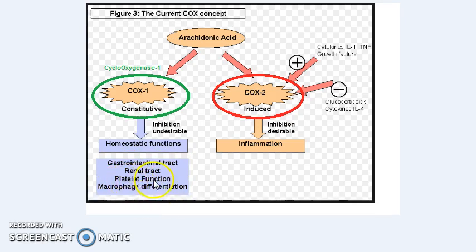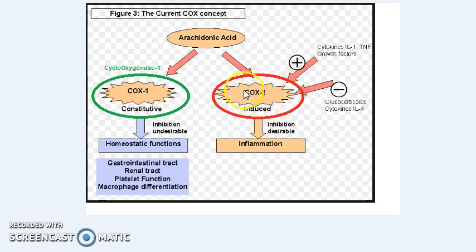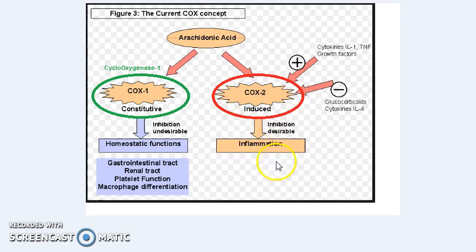In the blood vessels this involves platelet function and macrophages. Now during inflammation, cytokines released during the inflammatory process induce an enzyme called cyclooxygenase 2, or COX-2. COX-2 is therefore an induced enzyme. It converts arachidonic acid into prostaglandins that help drive the inflammatory reaction.